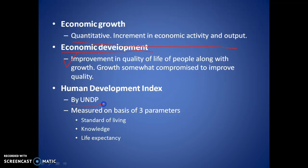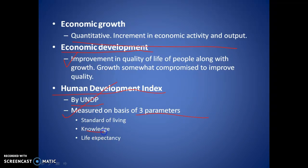Then we have the Human Development Index, produced by UNDP. As is clear from the name, it shows the development index of human well-being. It is measured on three parameters: standard of living, knowledge, and life expectancy. Standard of living covers employment opportunities; knowledge covers education and school enrollment — how many children are being enrolled and what the education status is.